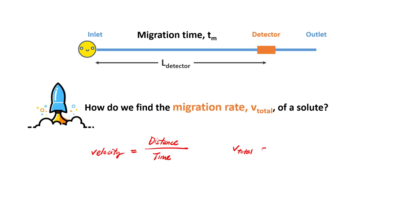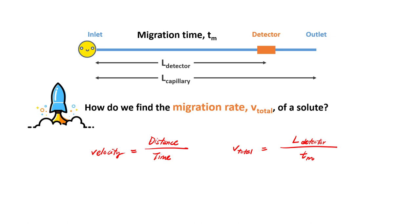So the migration rate will be equal to the distance traveled, which is the length to the detector, divided by the time span, which is the migration time. Therefore, we can calculate the migration rate using the length to the detector divided by the migration time. However, take note that the length to the detector is different from the length of the capillary. Since the detector is on the column, this is a type of on-column detection.